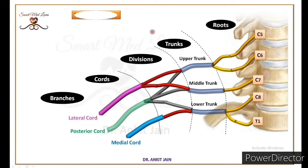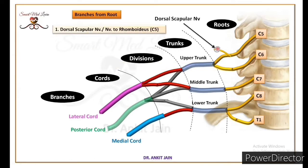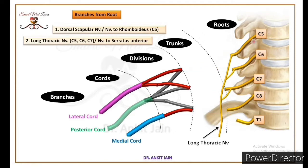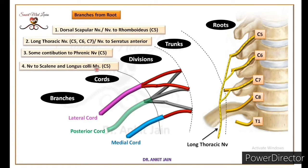Now we discuss the branches of brachial plexus. First, we discuss the branches from the root. Root se nikalne wali pahli branch hai dorsal scapular nerve, or nerve to rhomboids. Agar ham is nerve ko pichhe trace karen, toh ham dekh sakte hai ki ye nerve C5 root se signal le rahi hai. Means dorsal scapular nerve ki root value C5 hogi. Root se nikalne wali second branch hai nerve to serratus anterior, or long thoracic nerve. Ye nerve C5, C6 and C7 roots se signals le rahi hai, so is nerve ki root value C5, C6 and C7 hogi. In do nerves ke alawa, root se phrenic nerve and scaleni and longus colli muscles ke liye bhi branches nikalti hai.